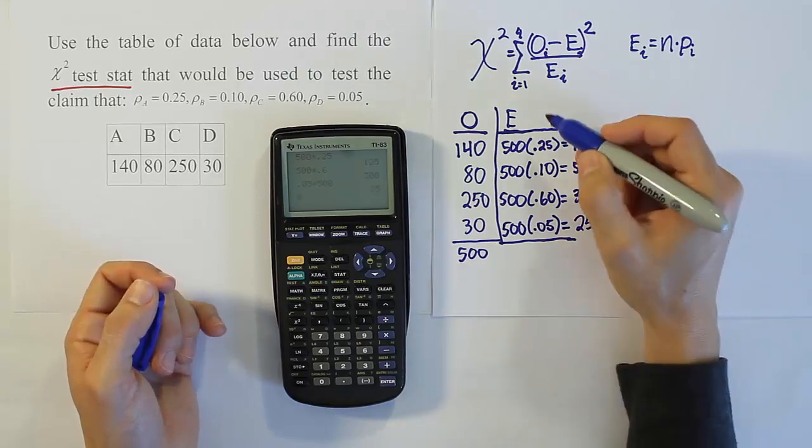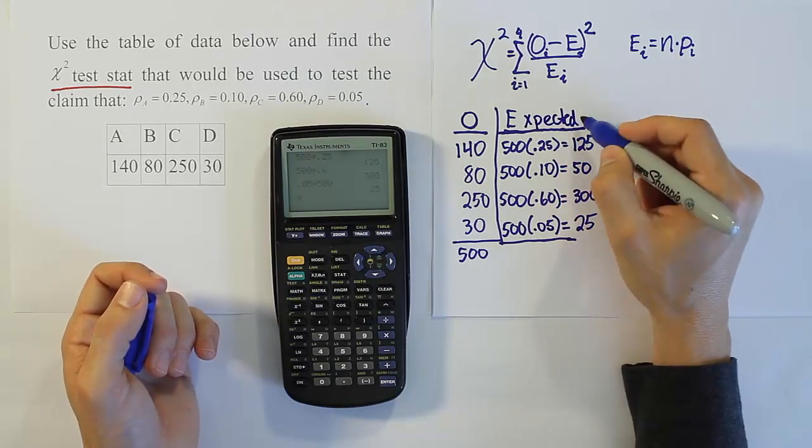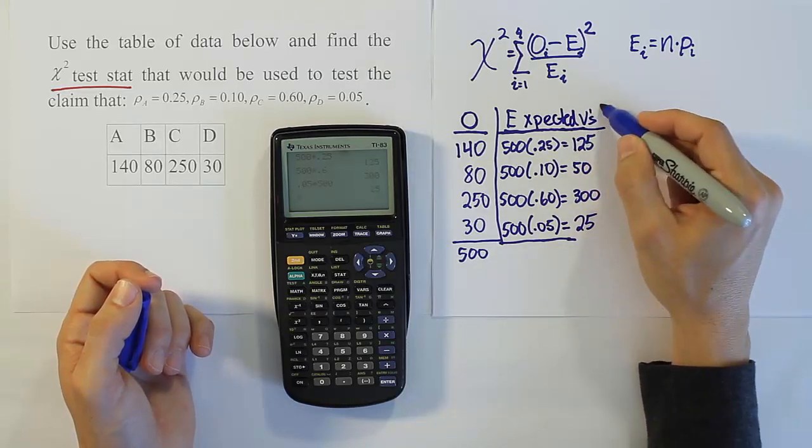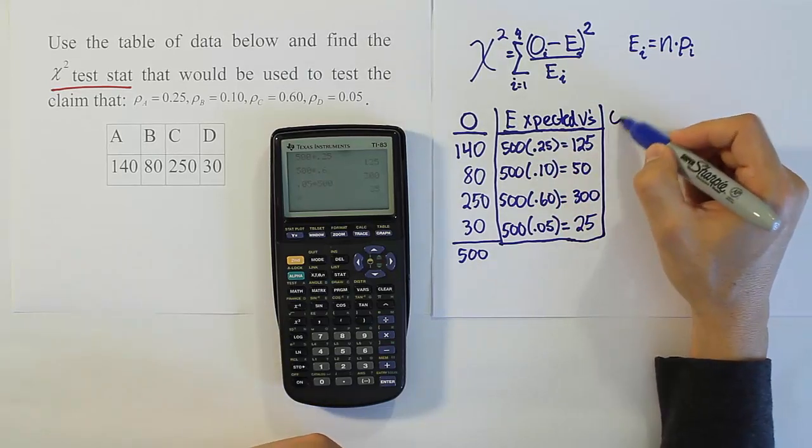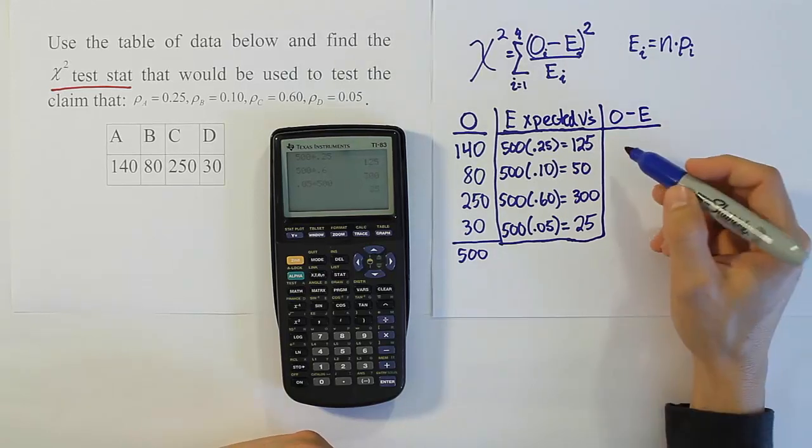Okay, so there's our answers. We have our expected values now, right? Expected values. Alright, good, so we have those. Now we do our next column, which is going to be the observations minus the expectations, right? Let's do that next.